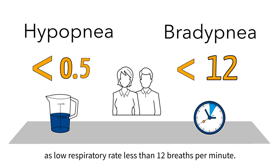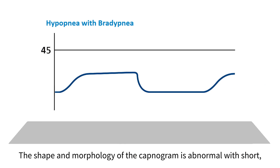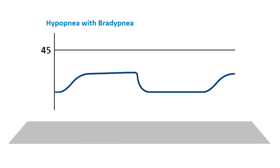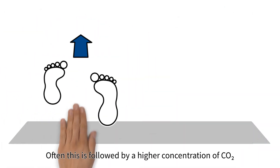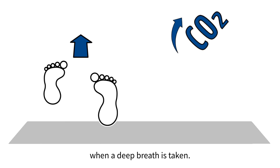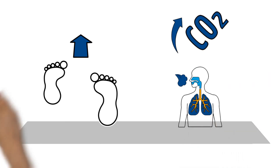Bradypnea is defined as less than 12 breaths per minute. The shape and morphology of the capnogram is abnormal, with a short, non-plateauing waveform and slow respiratory rate. Often this is followed by a higher concentration of CO2 when a deep breath is taken.